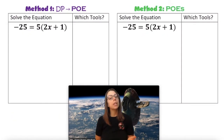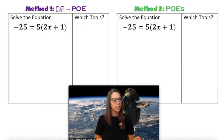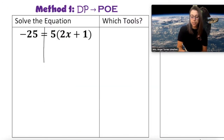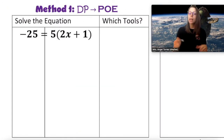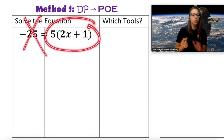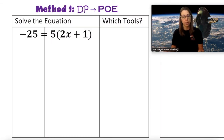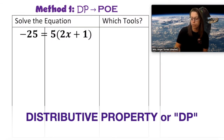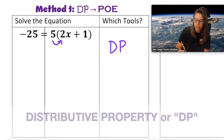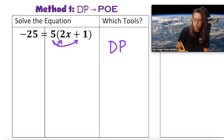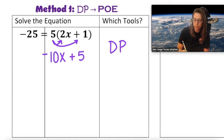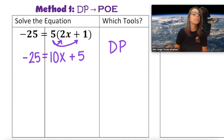In equation two, we're going to do the same thing: method one, distributive property first; method two, only properties of equality. As always, I start by putting a line down the middle of my equal sign. In this equation I notice that the variable is on the right side, so I'm not concerned with the other side. Let's start with method one by applying the distributive property to break our constant free. So 5 times 2x is 10x, and 5 times a positive 1 is a positive 5. The negative 25 on the other side is not affected.